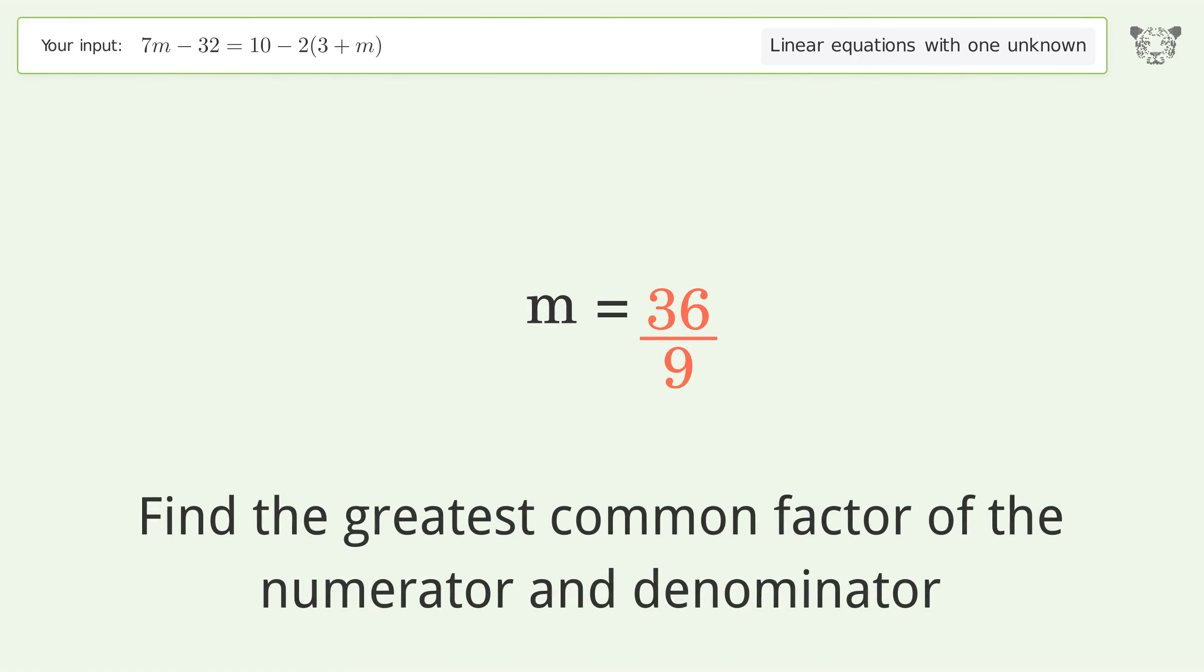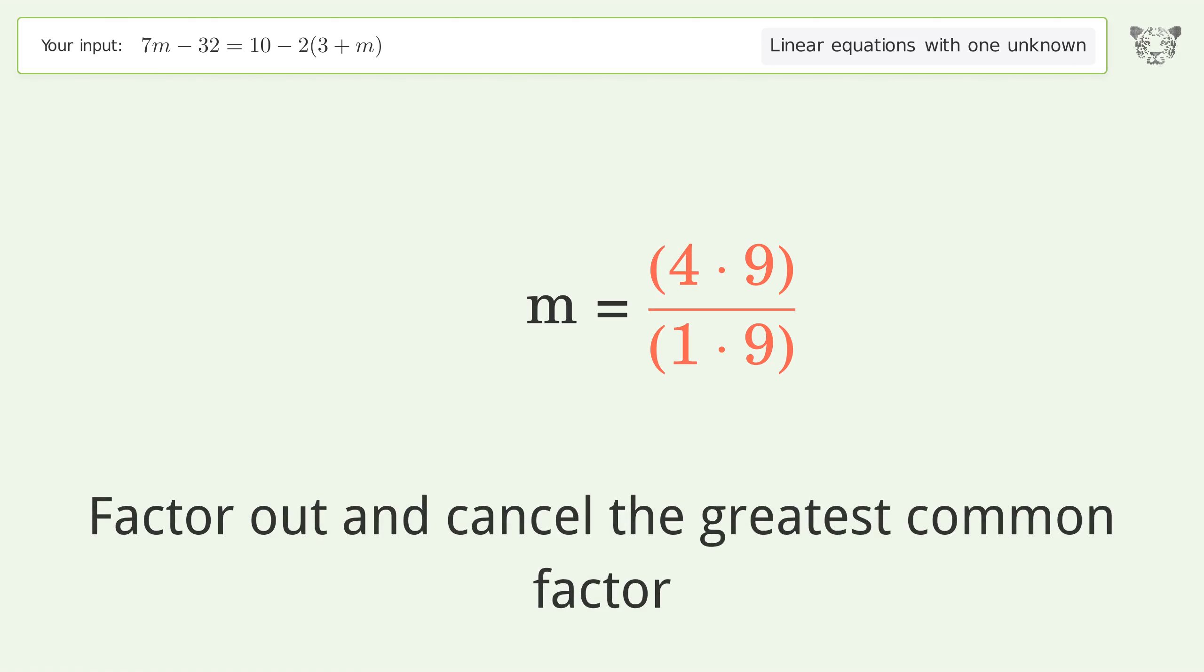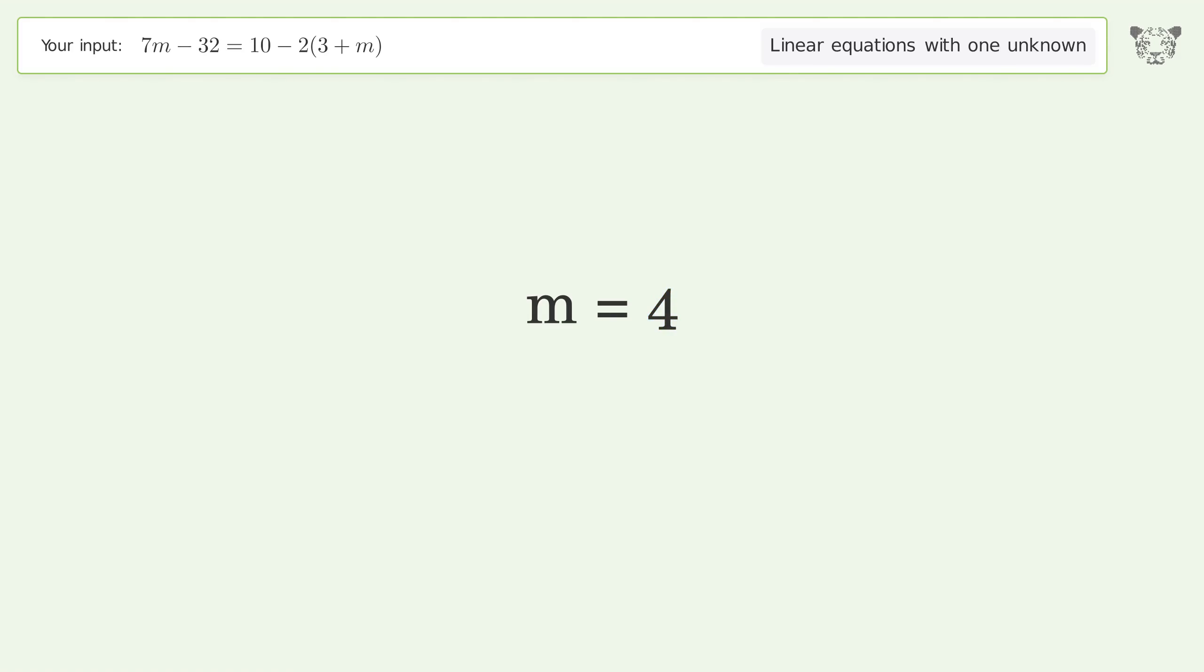Find the greatest common factor of the numerator and denominator. Factor out and cancel the greatest common factor. So the final result is m equals 4.